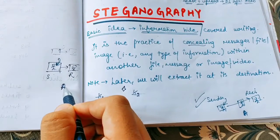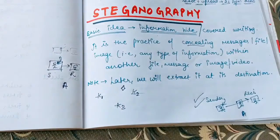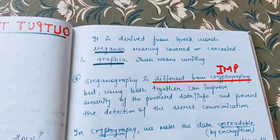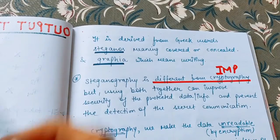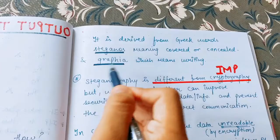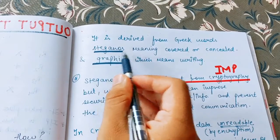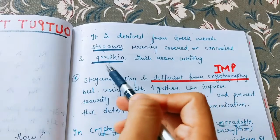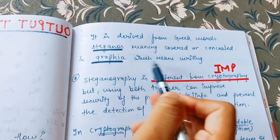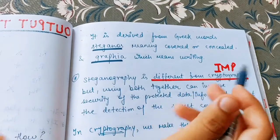So this is what we call steganography — we are hiding the information. Now, steganography is derived from two Greek words: stegnos and graphia. Stegnos means covered or concealed, that is hidden. And graphia means writing. So it is hidden writing or concealed writing.